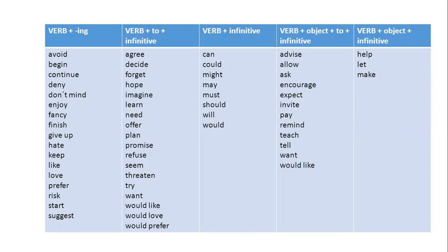Please look at this. You have verb plus verb-ing. You have verb plus 'to' plus infinitive, like 'agree,' 'decide.' You also have verb plus infinitive — this is a modal verb: can, could, may, might, must, should, will, would.